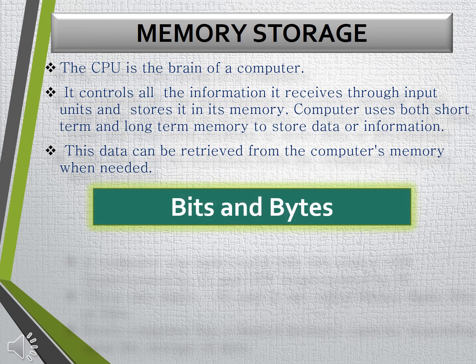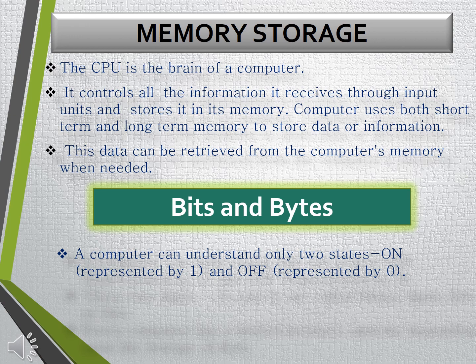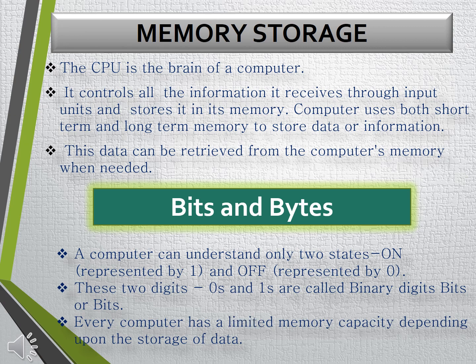What are bits and bytes? A computer can understand only two states: on and off, where 1 represents the on state and 0 represents the off state. These two digits, 0s and 1s, are called binary digits or bits. All numerical numbers are represented by only 0s and 1s. The data is stored in computer memory in the form of bits and is measured in bytes.